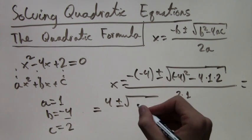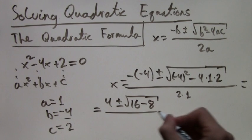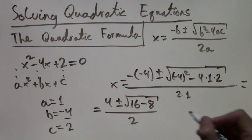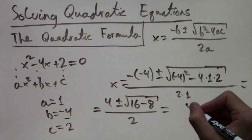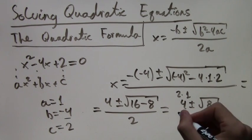So we get 4 plus or minus. Negative 4 squared is 16. 4 times 1 times 2 is 8. And 2 times 1 is 2. So now this simplifies to 4 plus or minus the square root of 8 over 2. Because 16 minus 8 is 8.